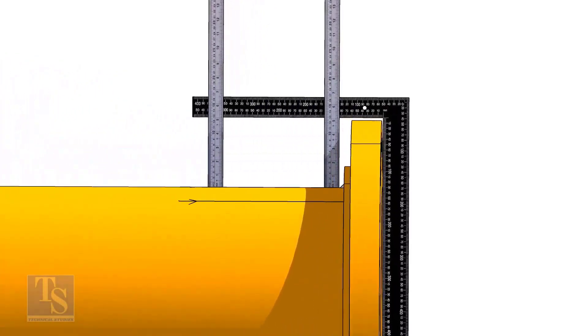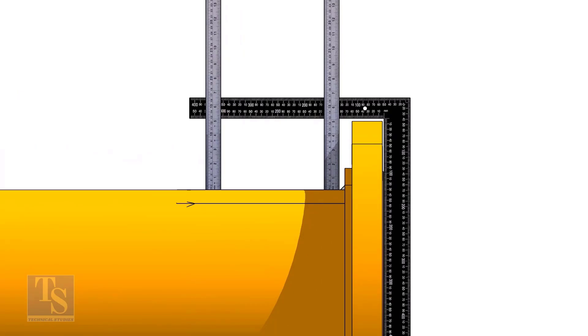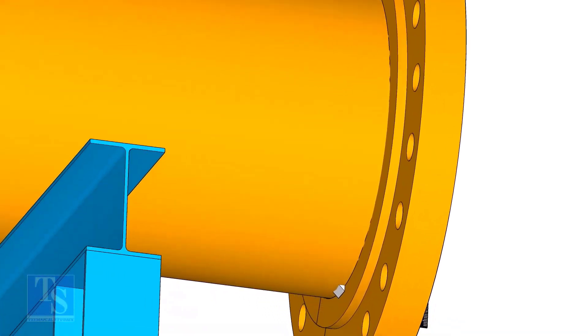Tack weld on the top of the pipe with the flange and check the squareness. If correct, tack weld at the bottom side also.